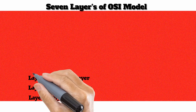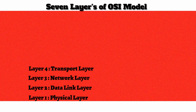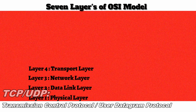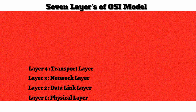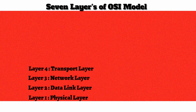Layer 4 is the transport layer. Two popular protocols live here: TCP and UDP. TCP is a reliable protocol — if I send you a layer 4 segment and I am using TCP, I expect you to acknowledge it and tell me you received the data and are ready for more. Contrast that with UDP: with UDP I send you data and hope you get it, but I am not going to expect you to acknowledge receipt of that data.